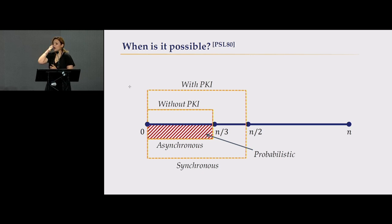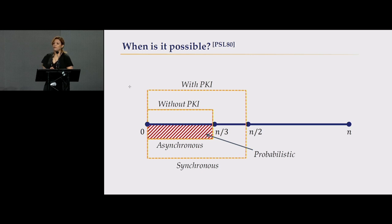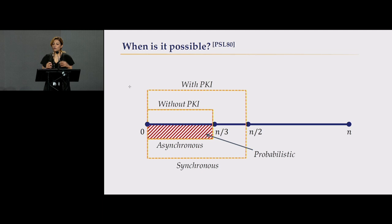There is huge research on what is possible and what is not. In an asynchronous setting — where you don't know the delay between messages — it is only possible if the fraction of corrupted nodes is less than one-third. But in a synchronous setting, it is possible if the fraction of corrupt nodes is less than one-half. Also, without a public key infrastructure or signature schemes, it's only possible if the fraction is one-third; with public key infrastructure, you can go up to one-half.